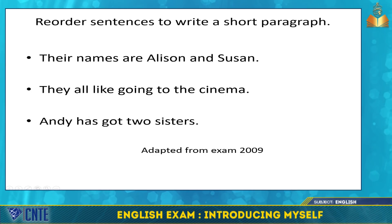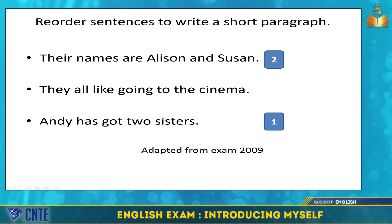Now let's go to question two: reorder sentences to write a short paragraph. The sentences are — first: their names are Allison and Susan; second: they all like going to the cinema; third: Andy has got two sisters. The correct order is: Andy has got two sisters. Their names are Allison and Susan. They all like going to the cinema.